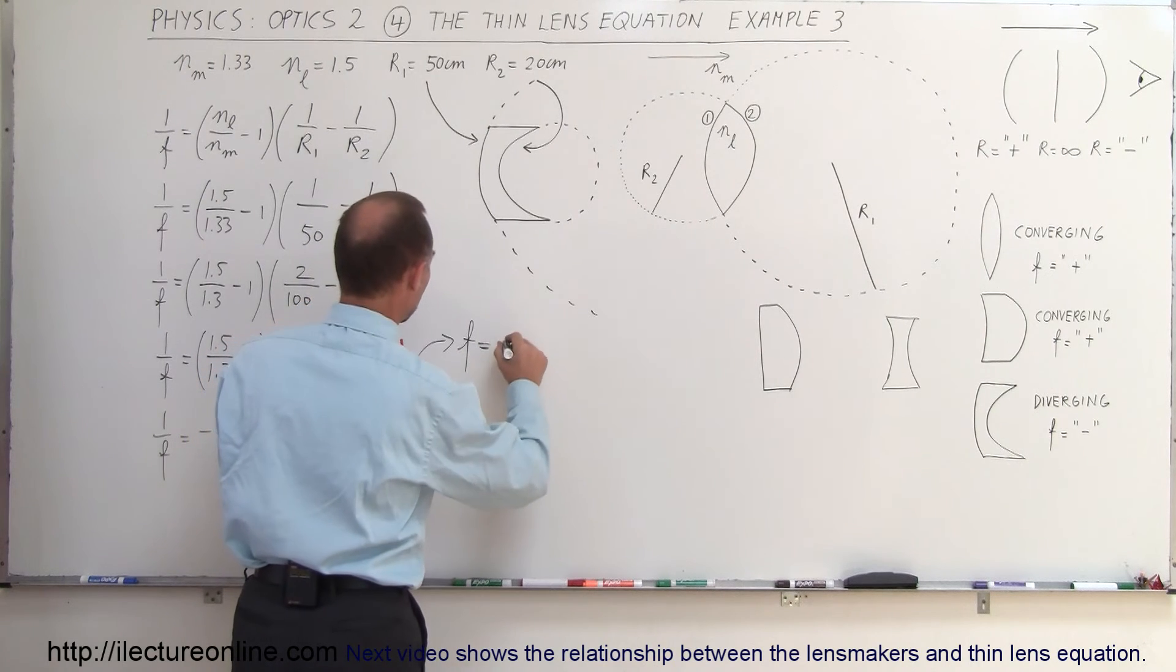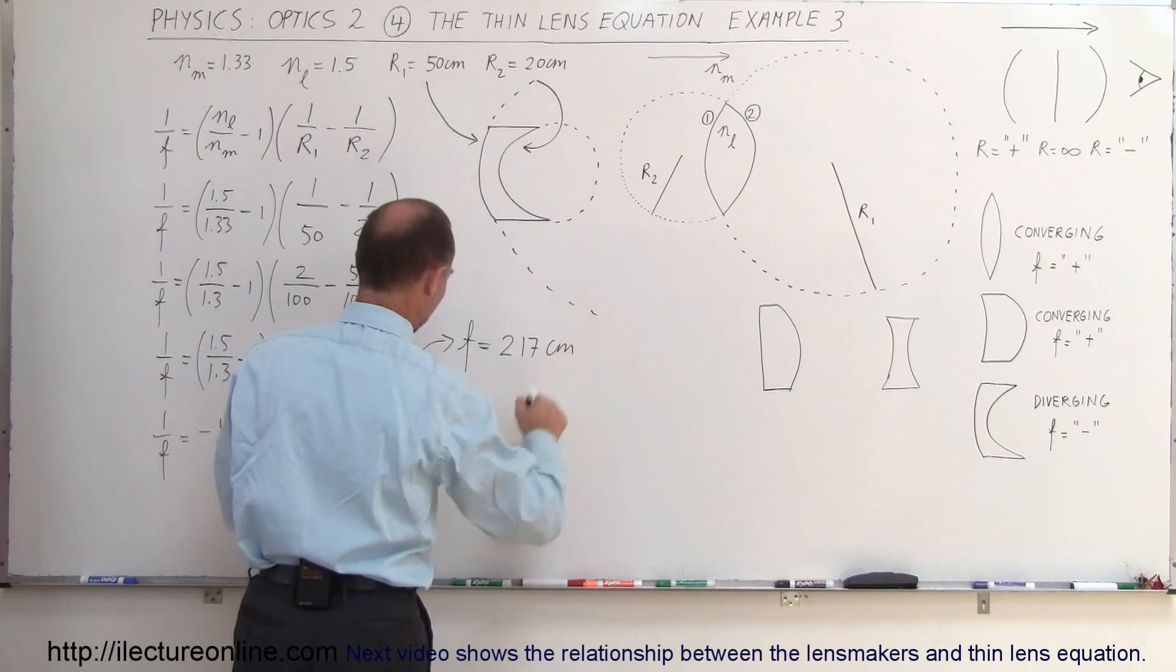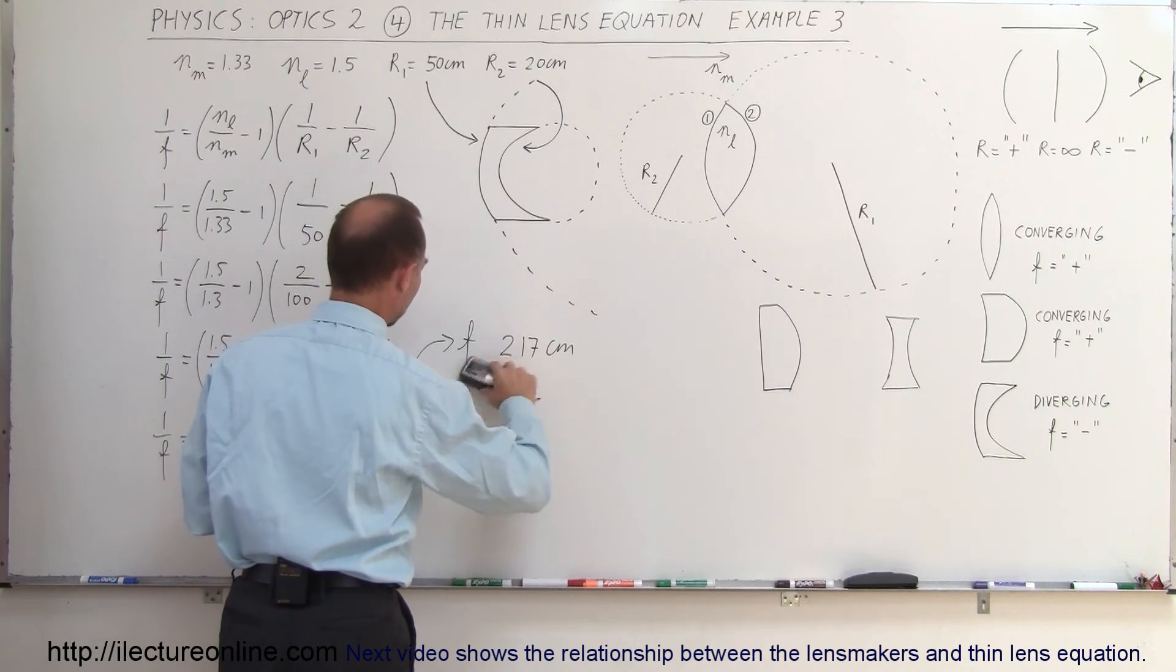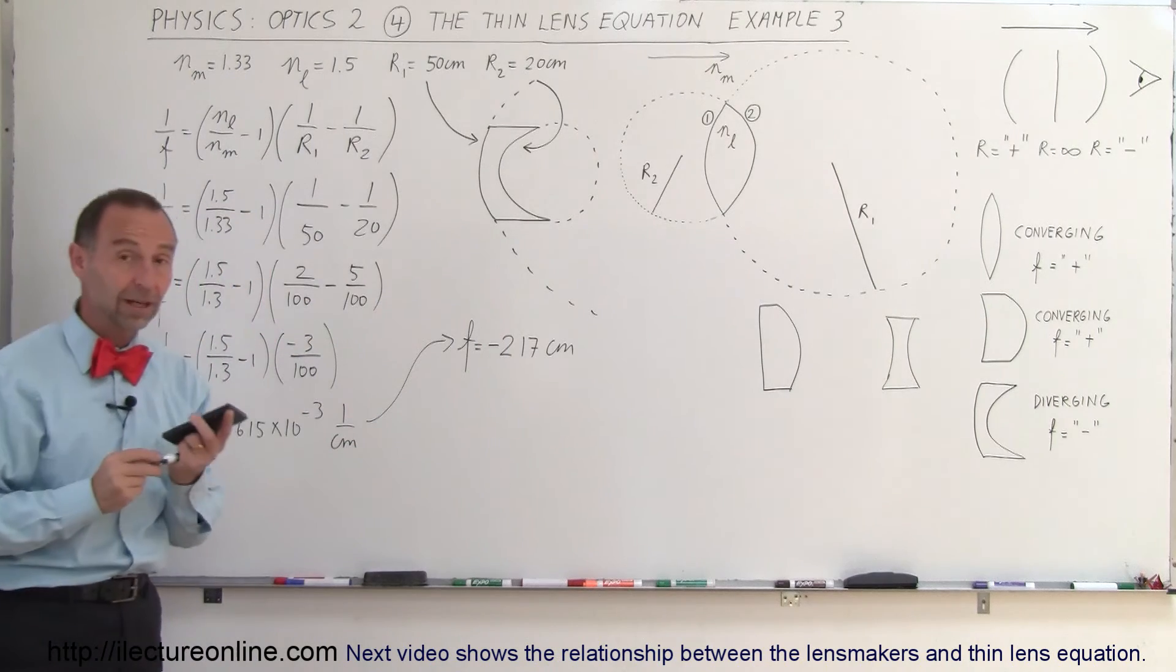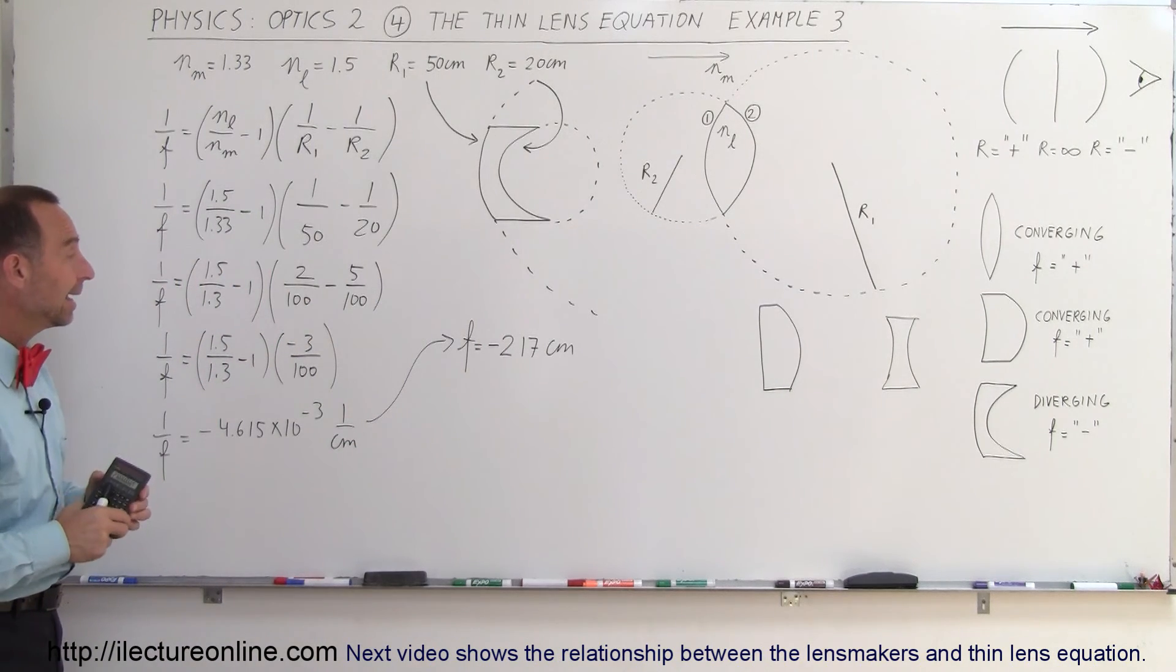There we go. So it would be 217 centimeters and, can't forget the negative sign, equals minus 217 centimeters because that makes it indeed a diverging lens.